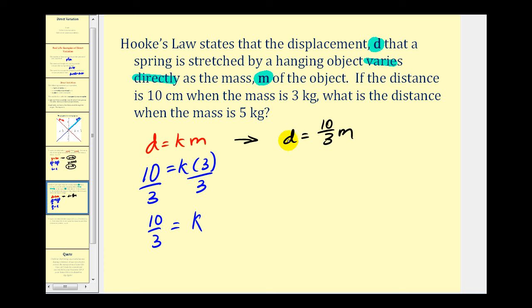And so now we can answer the question, what is the distance or displacement when the mass is 5 kilograms? So we'd have D equals 10-thirds times 5. Well, that's going to give us 50-thirds. So our displacement would be 16 and 2-thirds centimeters when the mass is 5 kilograms. Let's take a look at one more example.